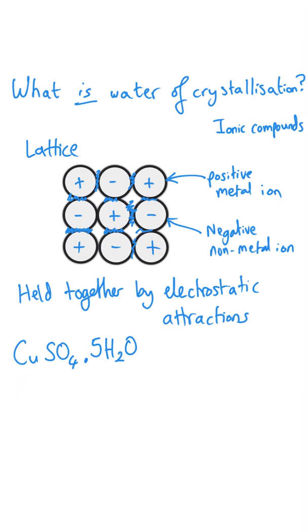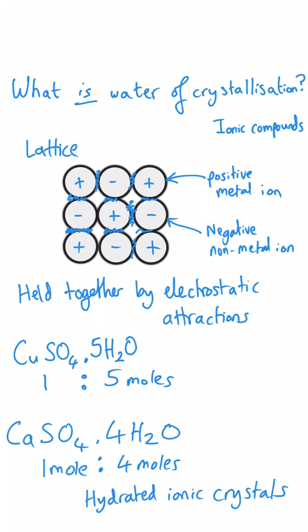If we had two copper ions and two sulphate ions, there would be ten water molecules trapped within that lattice. It is, if you like, a mole ratio where there is one copper sulphate mole for five moles of water. Every time we write the formula of an ionic substance, like calcium sulphate dot 4H2O, we're showing the mole ratio. These are hydrated crystals with water trapped in their lattice, and the ratio is shown in the formula.